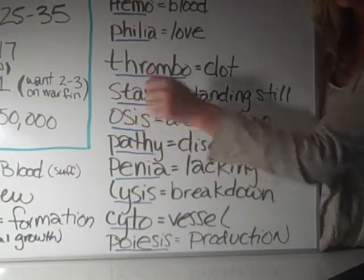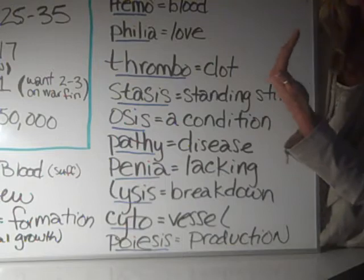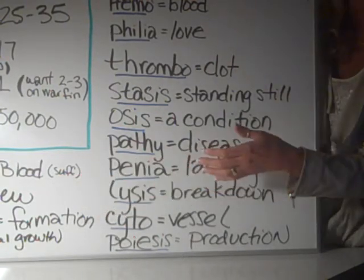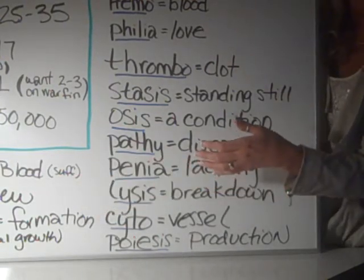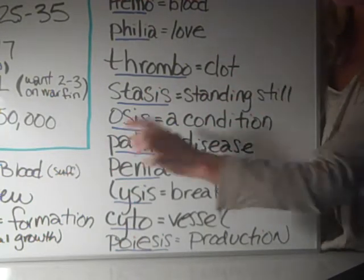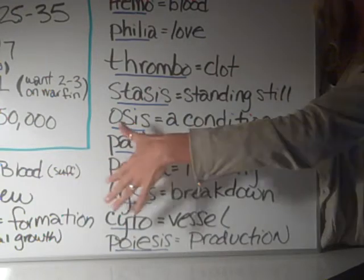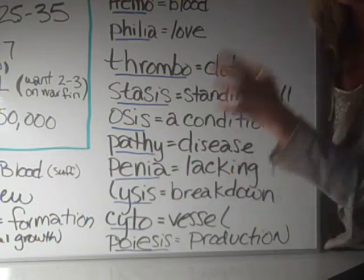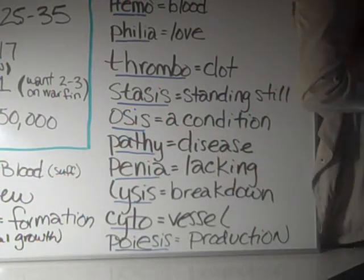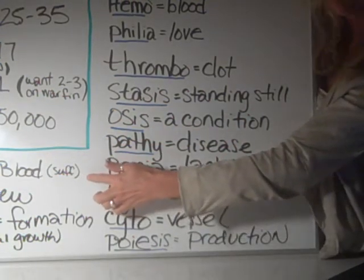If you see E-M-I-A — emia — at the end of a word as a suffix, that also means blood. So you could have poly — meaning too many — cythemia — emia is blood cells. That means you have too many red blood cells. Polycythemia: too many red blood cells in the vessels.